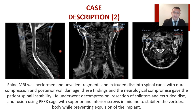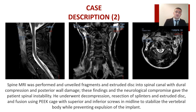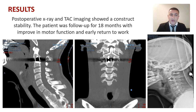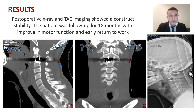The patient underwent decompression, resection of splinters, and fusion using a PEEK cage with superior and inferior screws in midline to stabilize the spinal body while preventing expulsion of the implant. Postoperative X-ray and CT images showed constructive stability. We followed the patient for 18 months and observed improvement in motor function and early return to work.